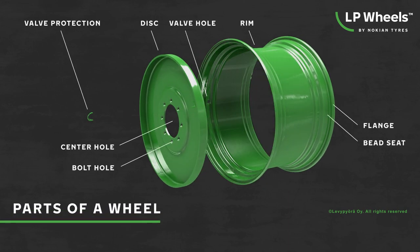A wheel consists of rim and disc. Additional parts like valve protection and flange reinforcement rings can be added.